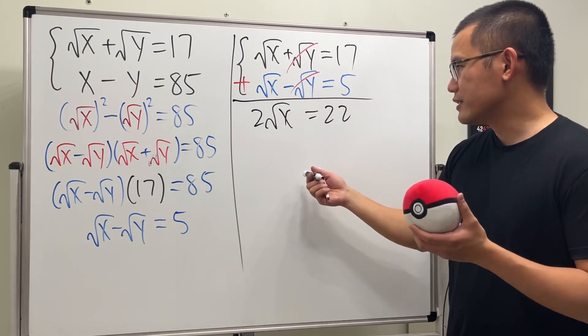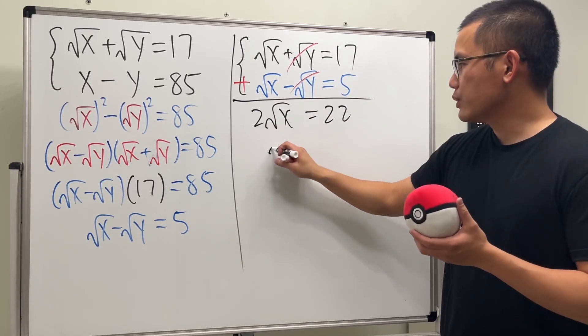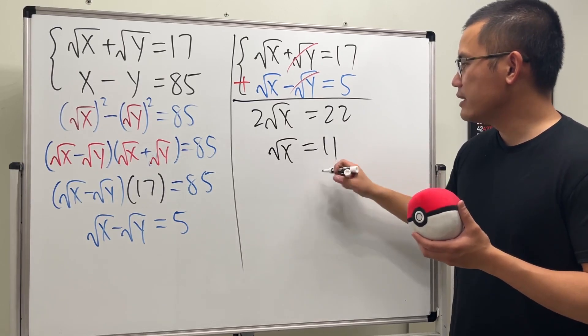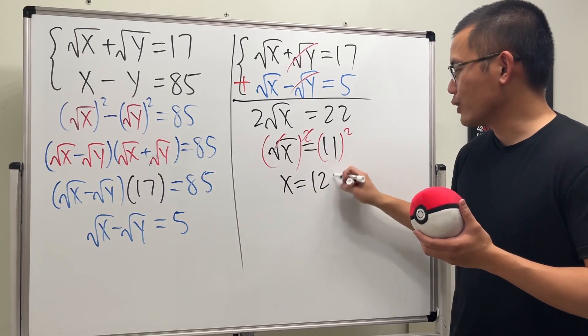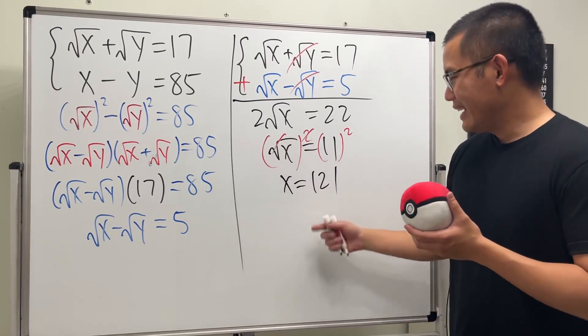So now we can just work this out. Divide the two on both sides, we get square root of x being equal to 11, and then square both sides, and we get x is equal to 121. Cool.